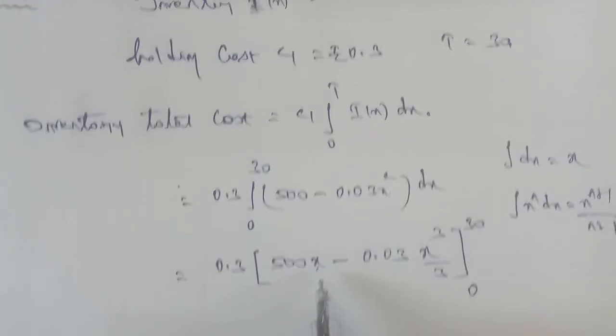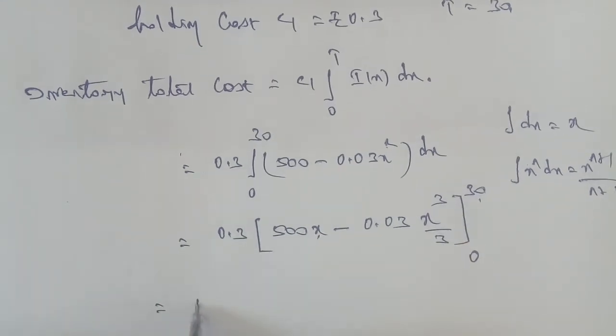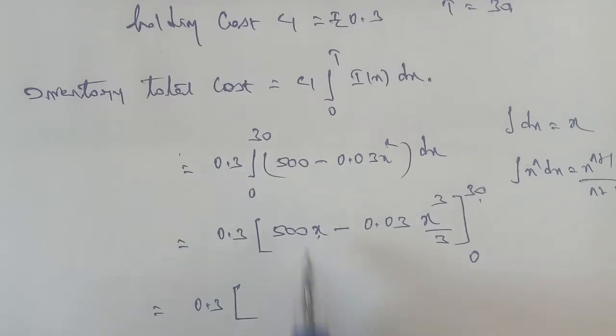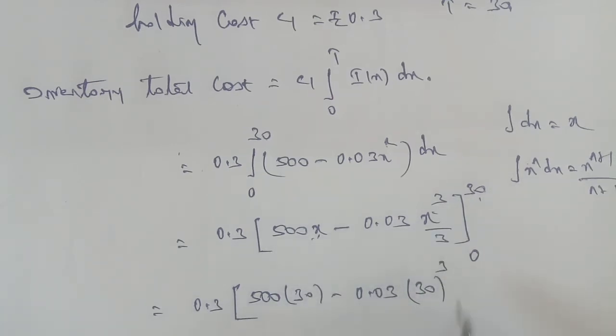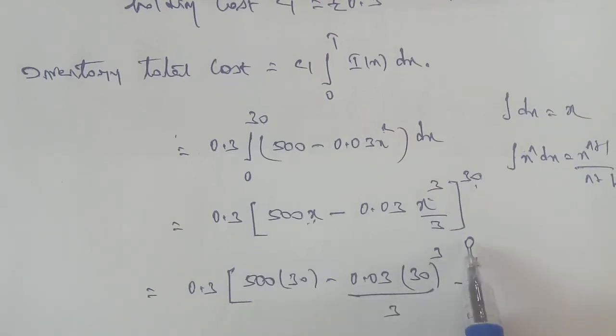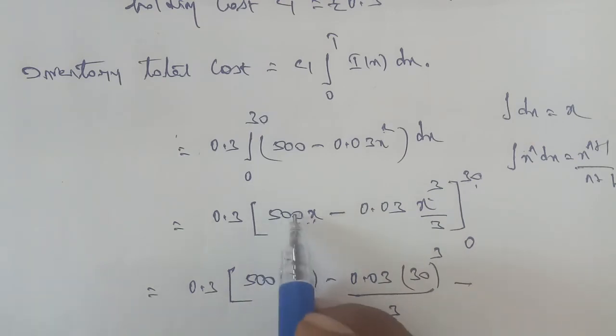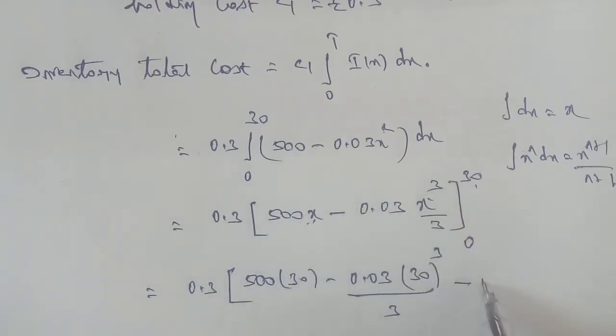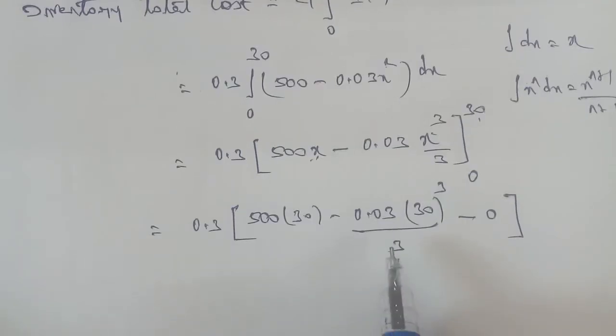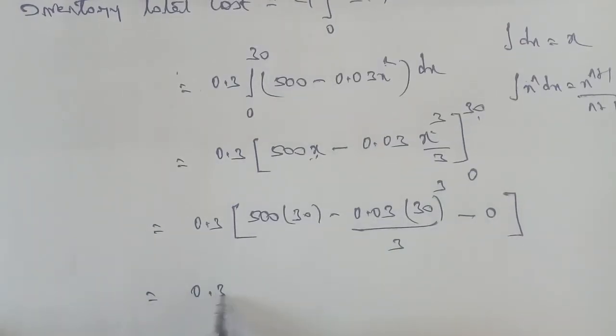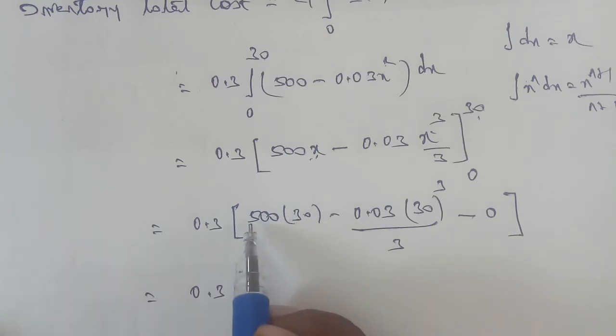Applying the upper limit, X value is 30. So 0.3, then 500 × 30 - 0.03 × (30³)/3. Next is lower limit, minus, but X value is 0, so both terms are 0. So we don't need to write 0. Simply, the answer is 0.3.